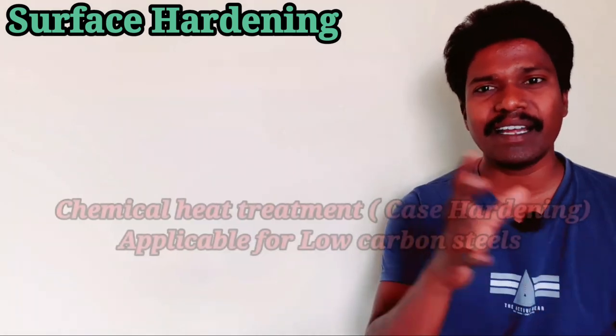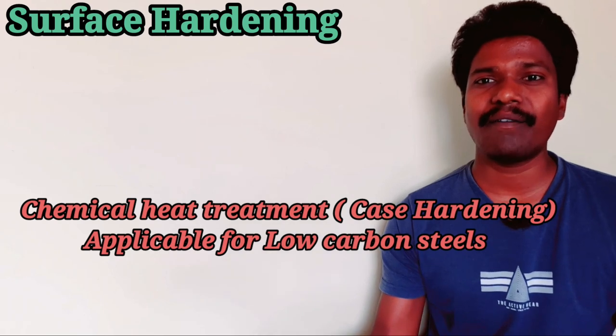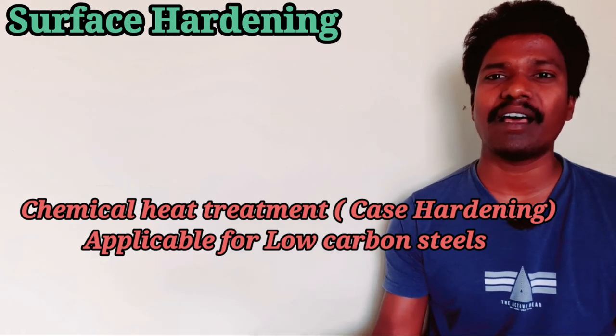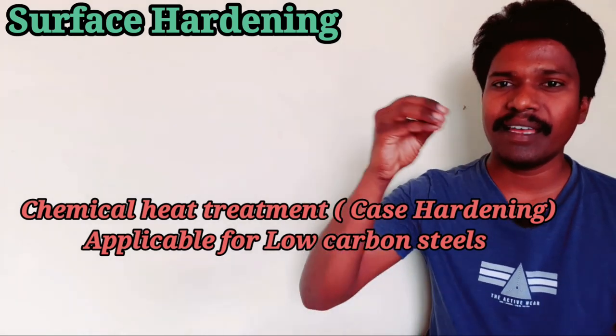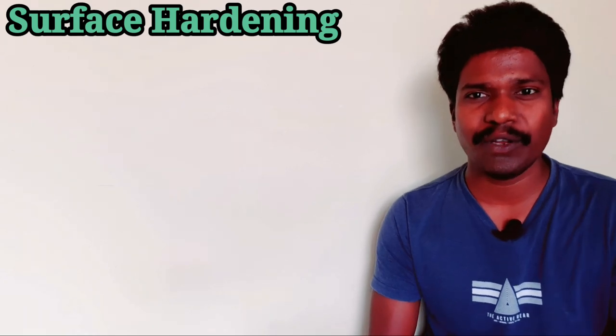That is why we use case hardening, which is chemical heat treatment. In chemical heat treatment, we add extra carbon to the surface of the material to increase the surface carbon content. We will discuss the details of case hardening in this video.